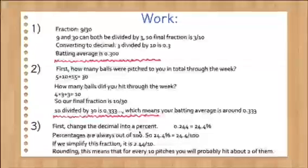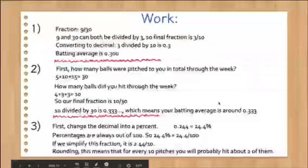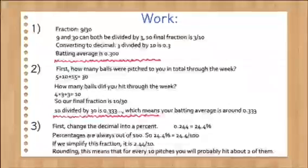And then our last problem, first change the decimal into a percent, so we have 0.244, move it two spots to the right, and it's 24.4%. So percentages are always out of 100. So 24.4% equals 24.4 out of 100. So if we simplify this, it's 2.44 out of 10. Rounding, this means that for every 10 pitches, you're probably going to hit around two of them.